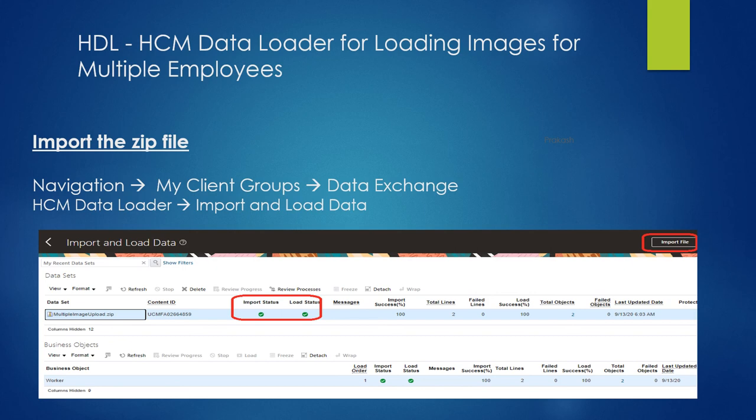Now click on Import File, which you can see at the top corner. Once you click on Import, provide the zip file that you have saved in your local folder and upload it. Once it has successfully loaded, the status will be changed to green.